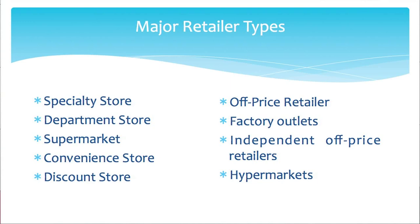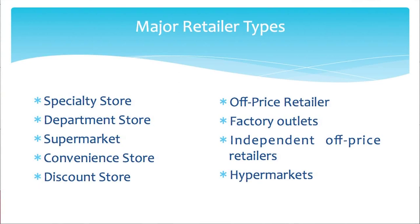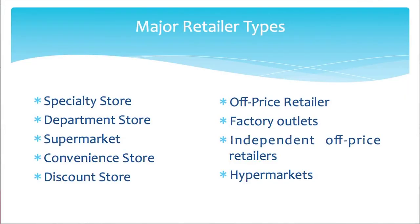Factory outlets are owned and operated by manufacturers and normally carry the manufacturer's surplus, discounted, and irregular goods. Then there are independent off-price retailers, which are owned and run by entrepreneurs or by divisions of large retail corporations. Another form of retail outlet is the hypermarket — large stores which combine supermarkets, discounts, and warehouse retailing all under one roof.